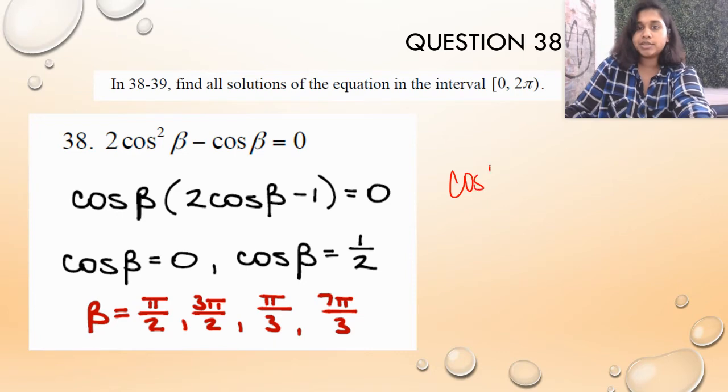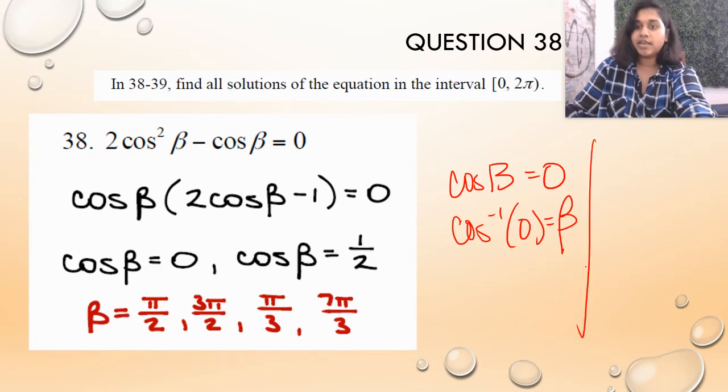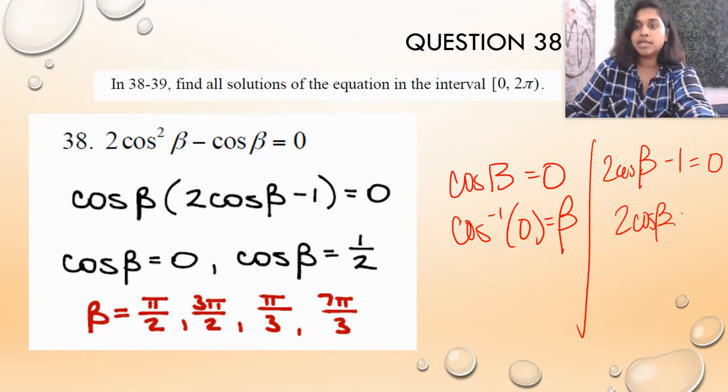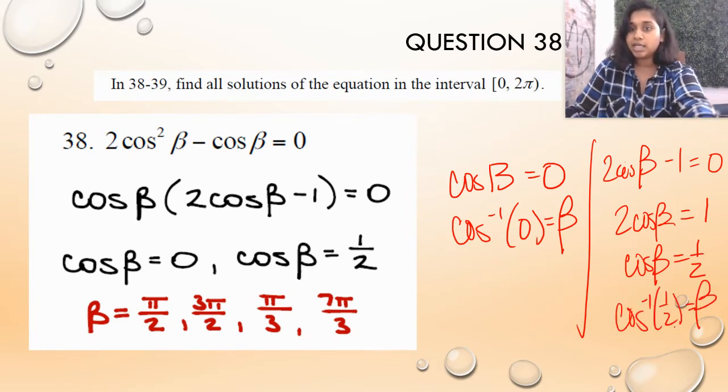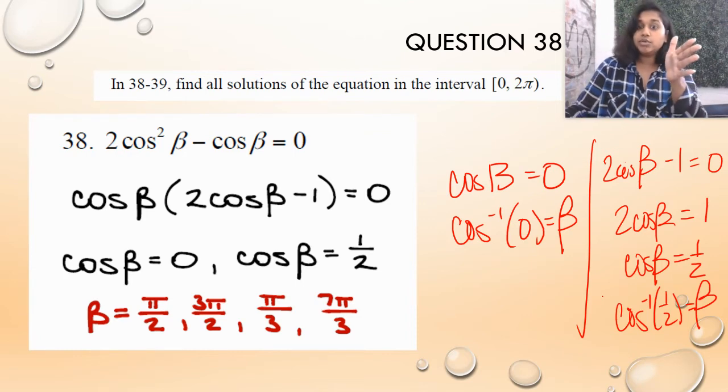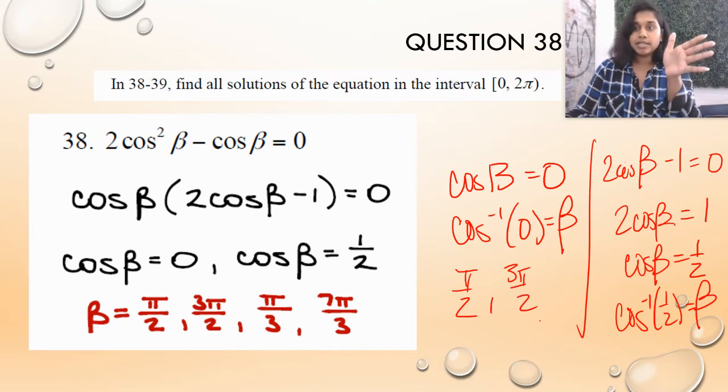So now I can split them up, set them both equal to 0. So you ended up with cosine of beta is equal to 0, so we have inverse cosine of 0 is equal to beta. Great. Then we have another set. We have 2 cosine beta minus 1 equals 0. So we end up with 2 cosine beta equals 1. And then we end up with cosine beta equals 1/2. And then we end up with the inverse cosine of 1/2 equals beta. Solving, we already know the cosine of 0. We solved that in the first one. So we know that this is π/2 and 3π/2. Great.